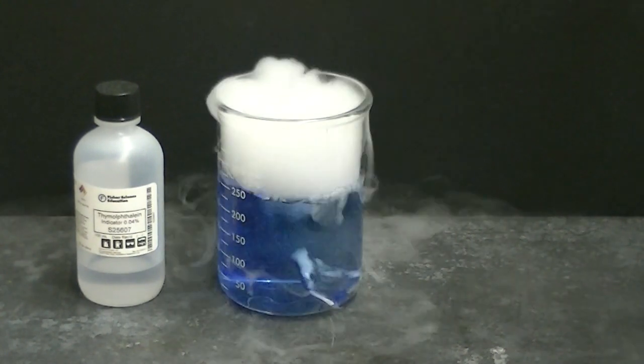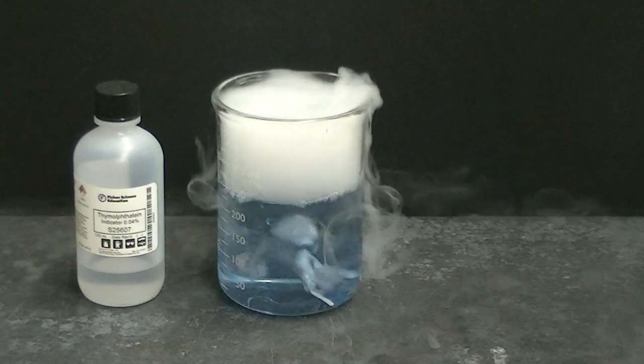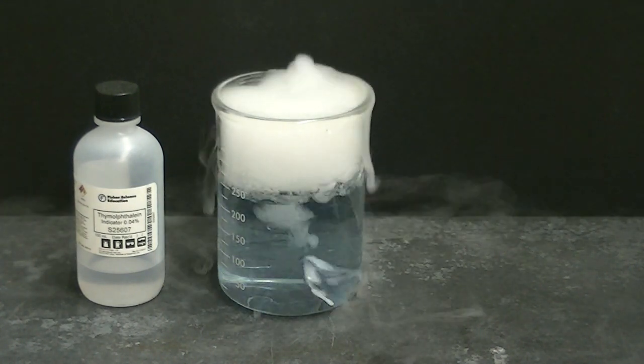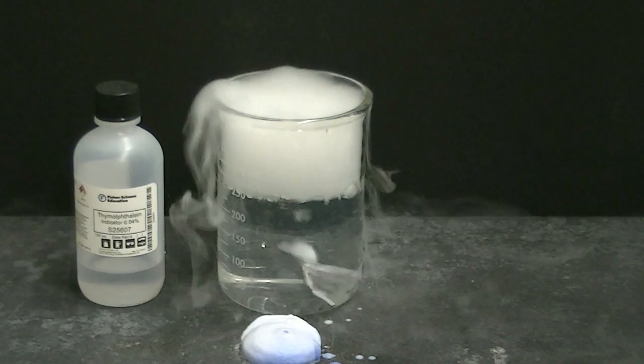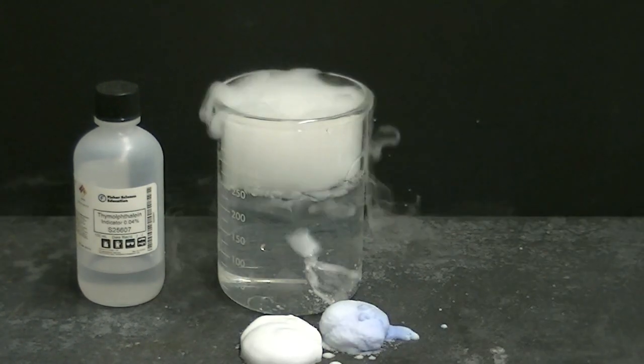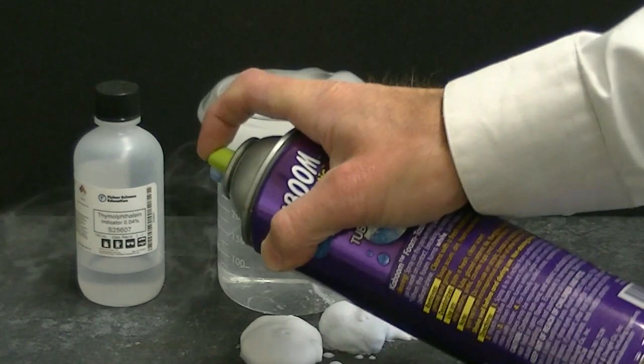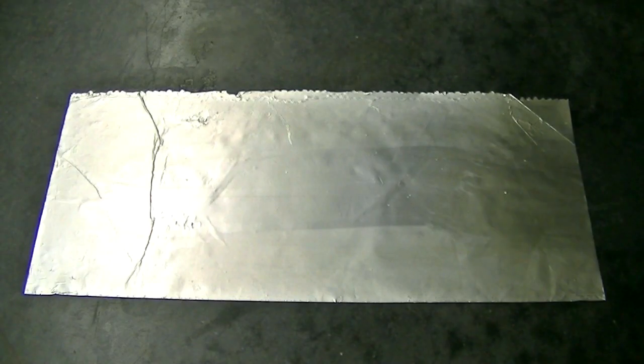As the carbon dioxide from the dry ice bubbles into the cleaner, it takes the color away. We can easily see this happen if we spray some of the cleaner next to the beaker. The carbon dioxide bubbling out of the beaker and spilling over the sides of the container immediately changes the color of the cleaner from blue to white. Let me show you one more trick you can do.